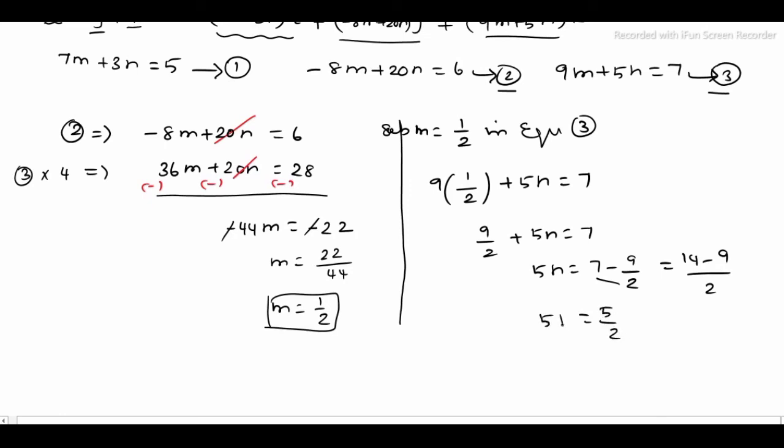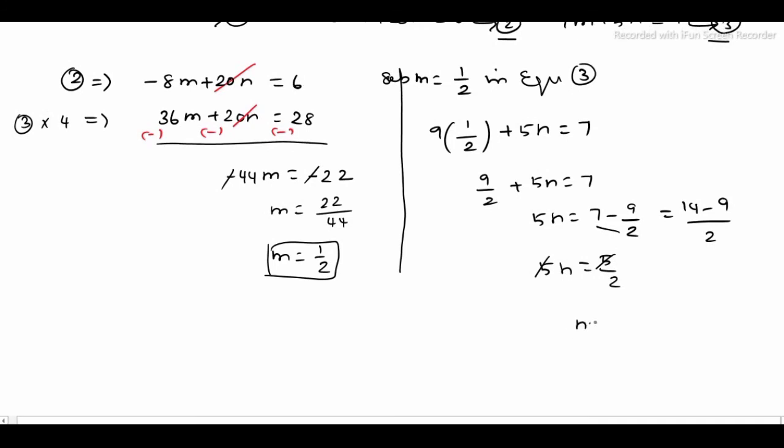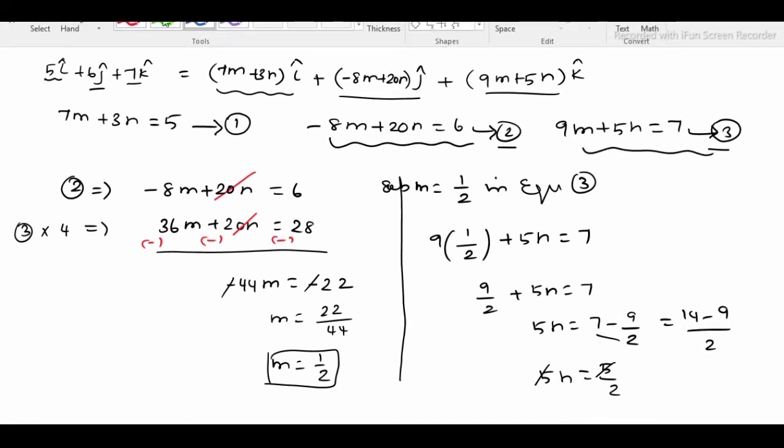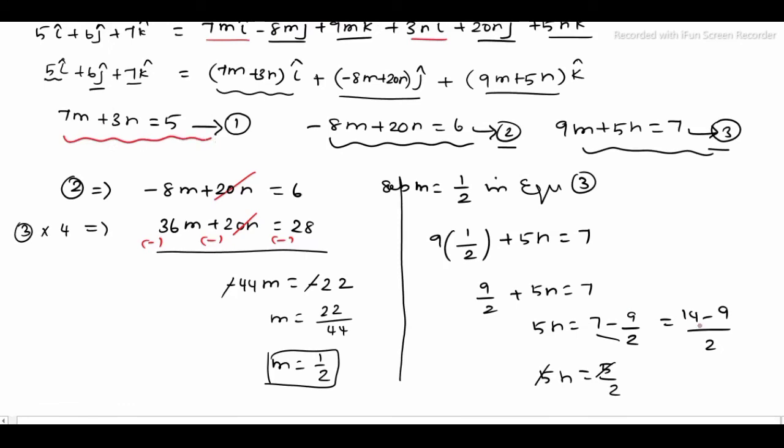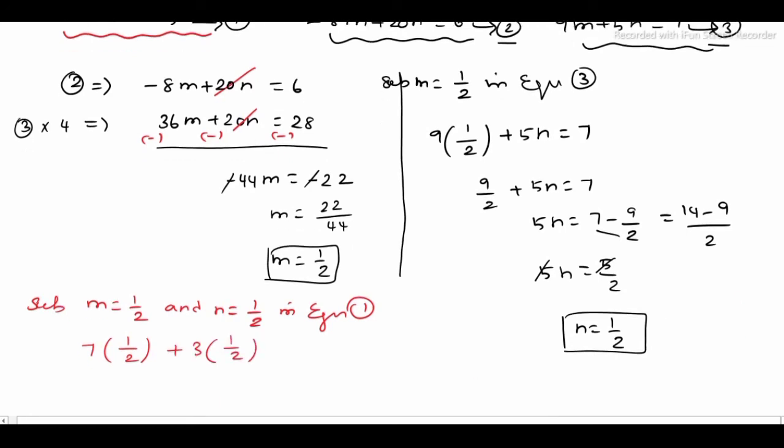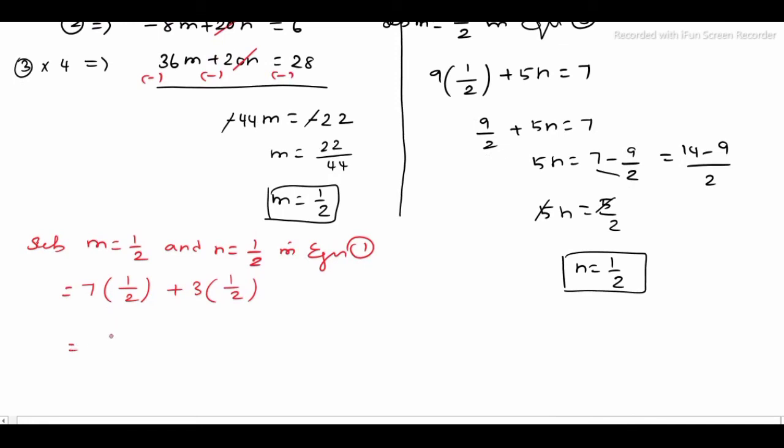We found m = 1/2 and n = 1/2. Now let's verify by substituting into equation 1: 7(1/2) + 3(1/2) = 7/2 + 3/2 = 10/2 = 5. This equals 5, so the equation is satisfied.